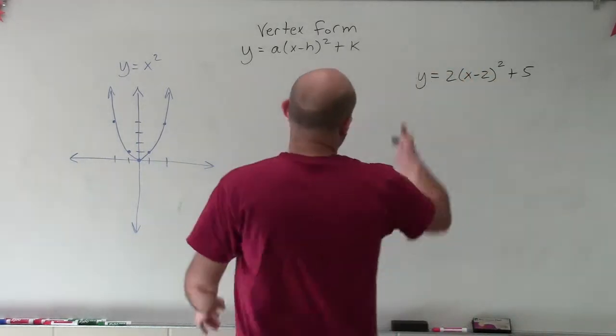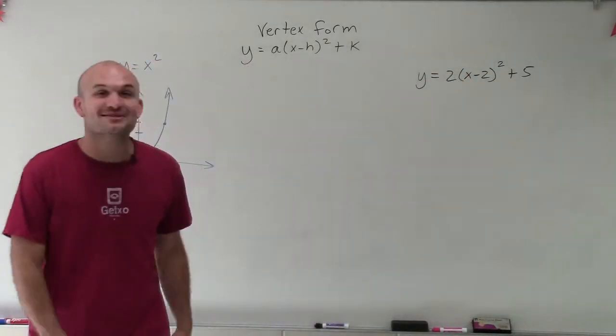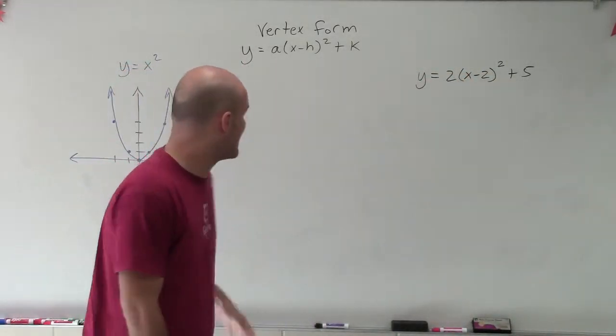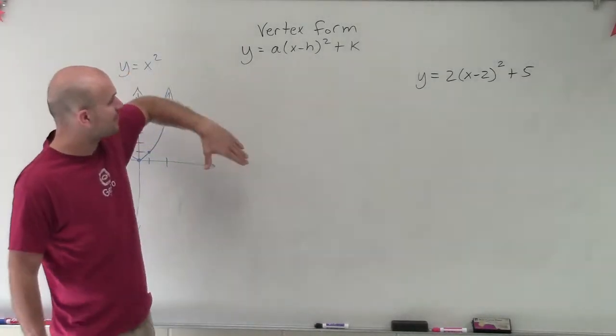I want to give you a little intro. So I have y equals 2 times x minus 2 squared plus 5. And what we're going to do is we're going to graph this in vertex form.